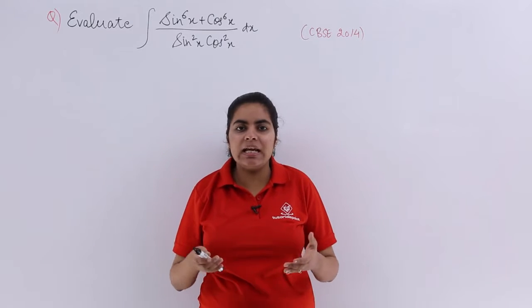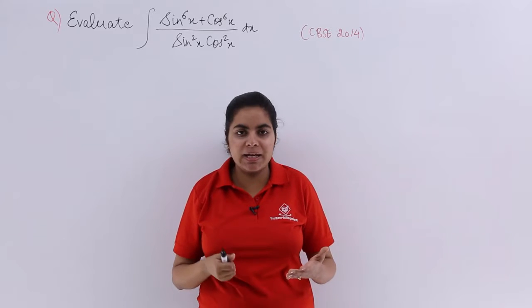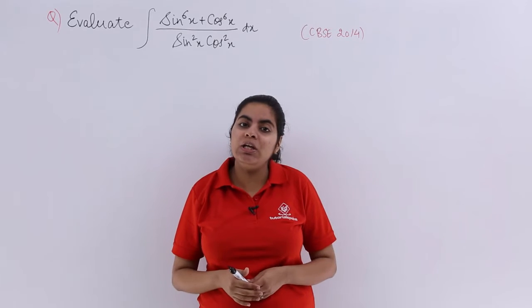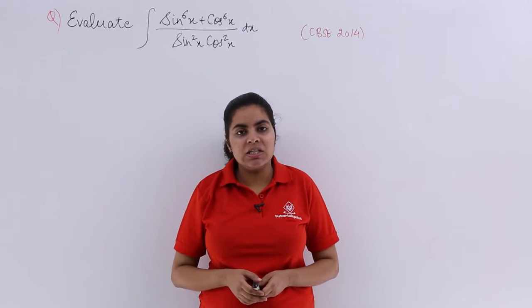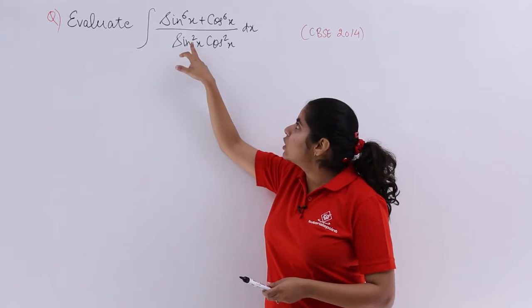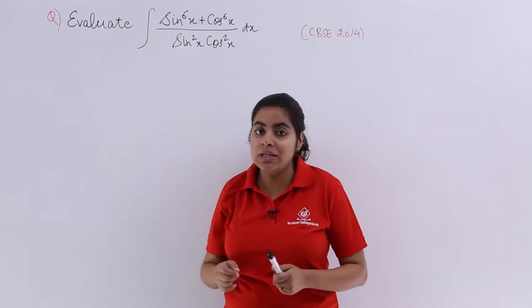So basically in the denominator there is the product of sin square x cos square x and in the numerator you have the exponent as 6. Now how is this 2 related to 6? Two threes are 6.